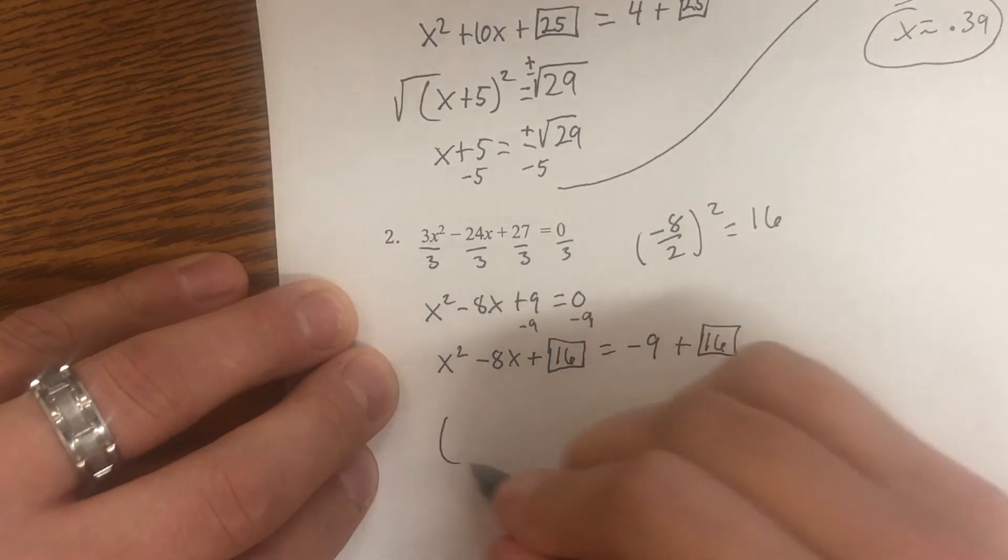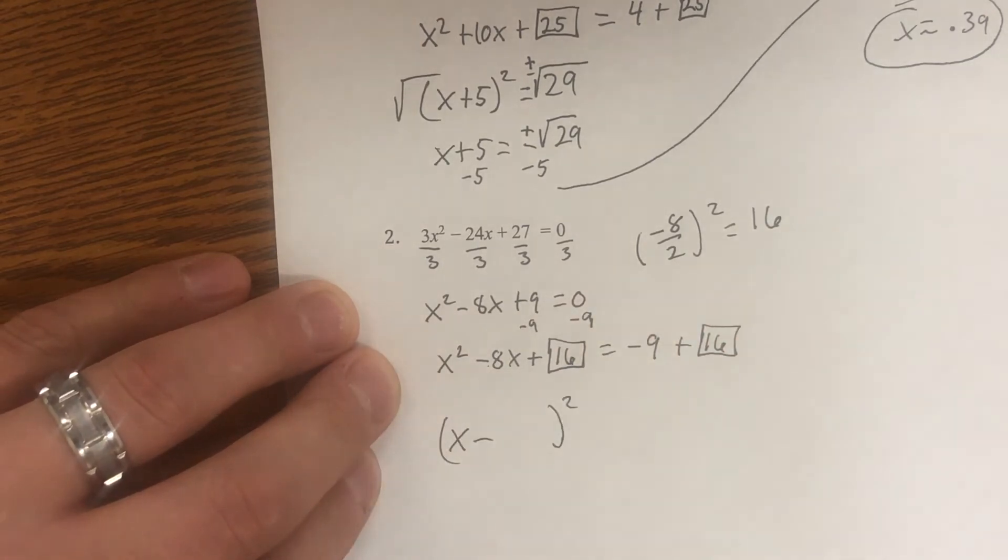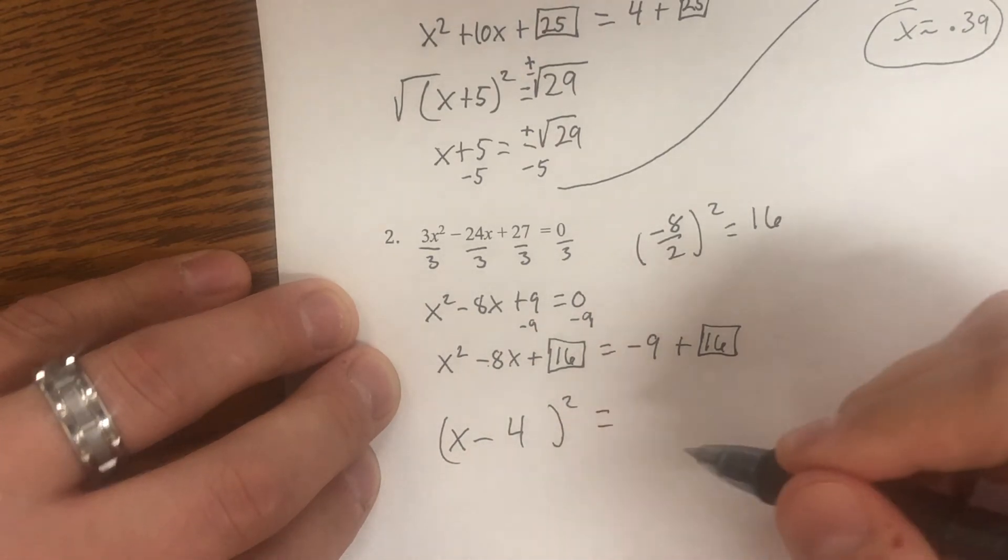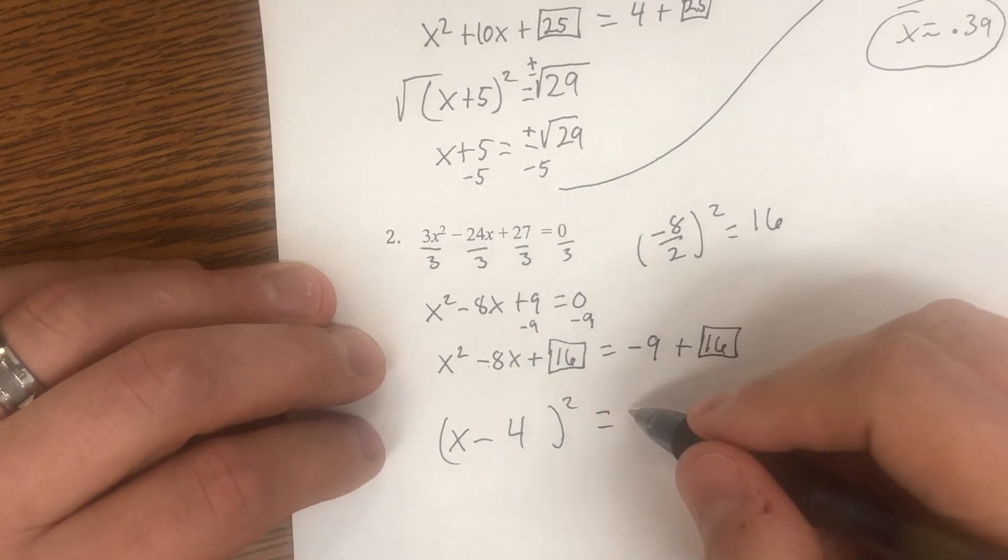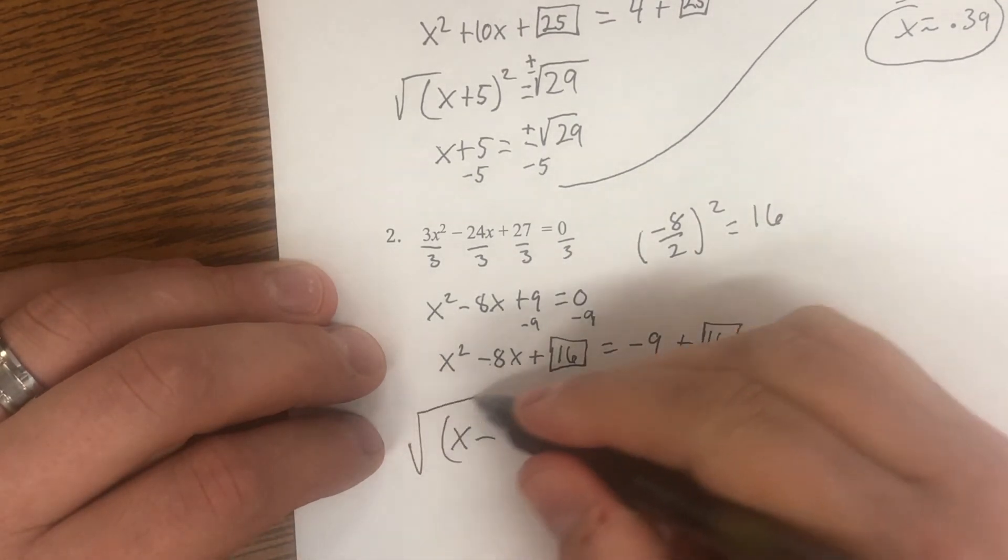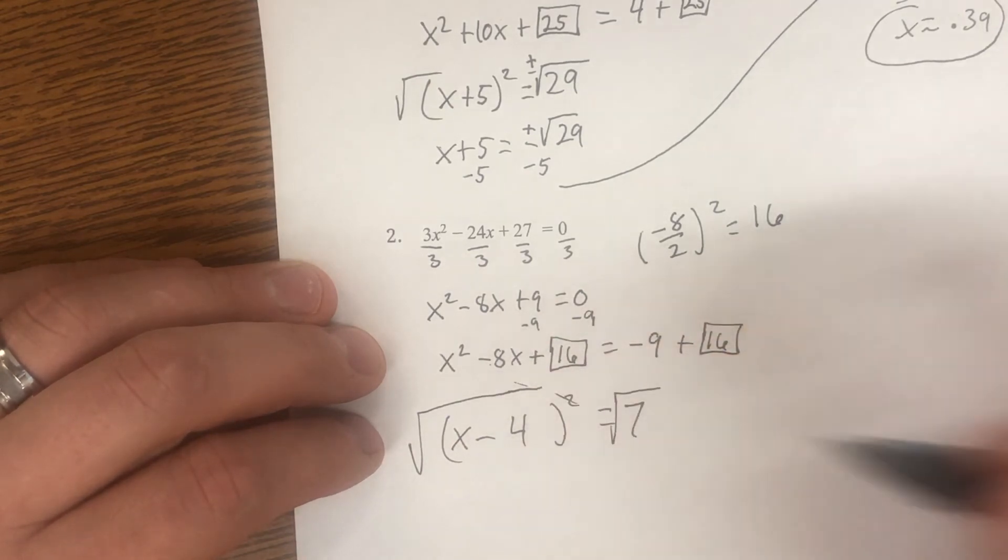Now our perfect square trinomial can be factored. Middle term's negative. x minus square root of 16 is four equals negative nine plus 16. That adds up to seven. Take the square root. Take the square root. Square root squareds cancel each other off. Those are gone. That's why we're putting that in.